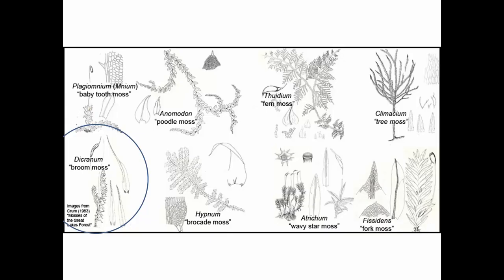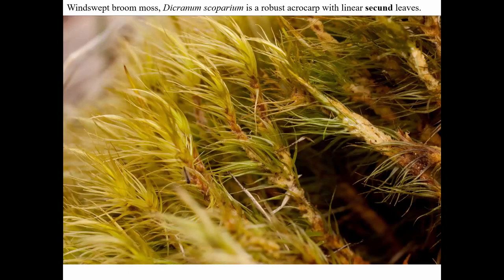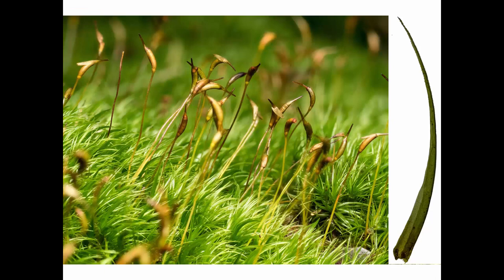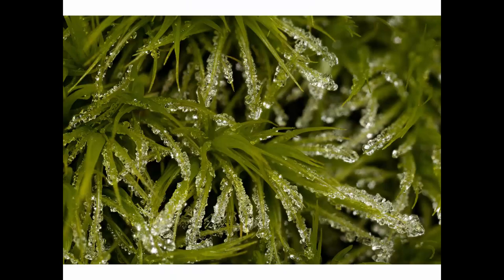Another smooth-leaved acrocarp is Dicranum, growing here on a mound of soil. Dicranum has very, very narrow, needle-shaped leaves that look like they've been swept to one side, as if blown by the wind. Here's Dicranum with sporophytes, and through the microscope we can see how narrow the leaf is. Down at the base of the leaf are the alar cells — brownish, thick, and dark-looking. These brownish groups of alar cells are distinctive for the genus Dicranum. Here's Dicranum scoparium in winter with ice on it.